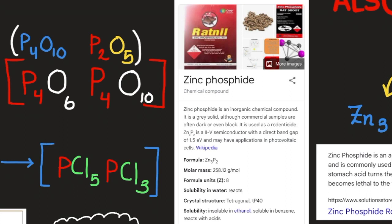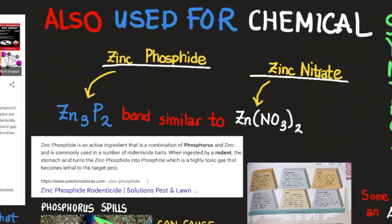So zinc phosphide is used for photovoltaics as well. Here we have the formula ZN3P2, and it's similarly bonded to the element nitrogen. As we previously mentioned, phosphorus is kind of like a nitrogen derivative, only more massive. If nitrogen and phosphorus were planets, nitrogen would be a smaller planet similar to a moon and phosphorus would be a bigger, larger planet equivalent to almost Jupiter size — more massive, but still considered a planet nonetheless.